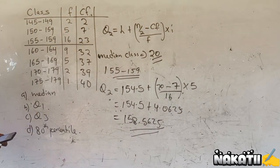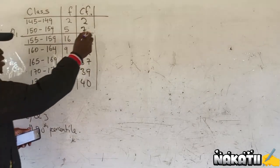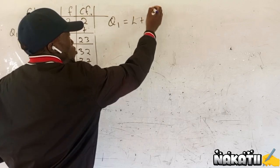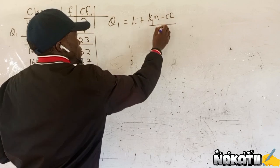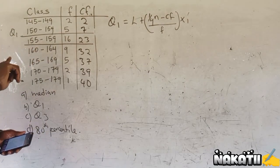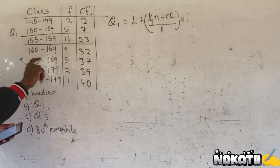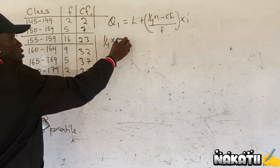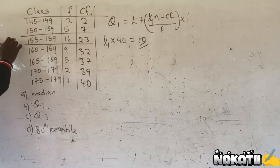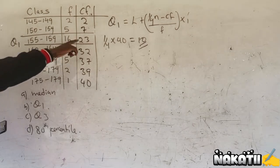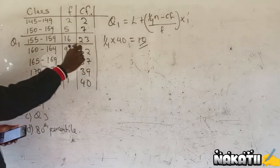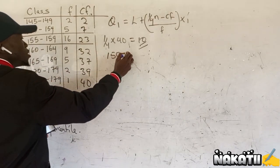Part B of the question: we need to find Q1. Using the formula, Q1 equals L plus 1 over 4 of N minus CF divided by F multiplied by I. To find which class has Q1, we take 1 over 4 times 40, giving 10. Since 10 is still inside 23 in the cumulative frequency, our Q1 will be in the class 155 to 159.